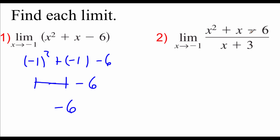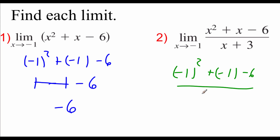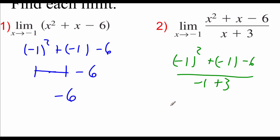For number 2, we've got the limit of (x squared plus x minus 3) all over (x plus 3) as x approaches negative 1. Before doing direct substitution, we check to make sure we don't get a zero denominator: plugging in negative 1 on the bottom gives negative 1 plus 3, which is 2 — we're okay. On top, we've got negative 1 squared plus negative 1 minus 6, which we already found is negative 6. So the answer is negative 6 over 2, which is negative 3.